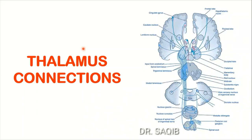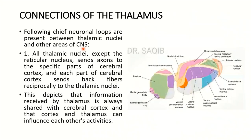This is the Learning Anatomy channel. This is the third lecture on the thalamus, covering thalamus connections. The following chief neuronal loops are present between the thalamic nuclei and other areas of the CNS. These are the various nuclei discussed in the previous lecture.